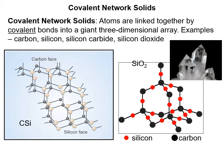First, covalent network solids. In covalent network solids, atoms are linked together by covalent bonds — not held together by London dispersion forces or any of the other IMFs or ionic bonds. It's covalent bonds in a giant three-dimensional array. Examples include carbon, silicon, silicon carbide (SiC), and silicon dioxide, otherwise known as quartz — this is also glass.